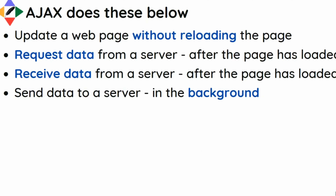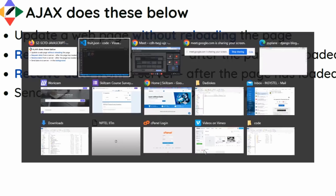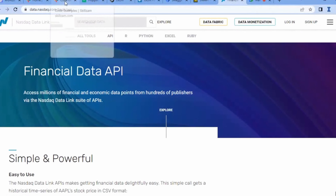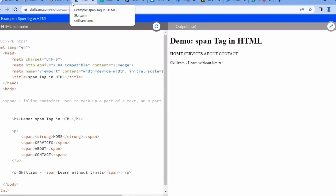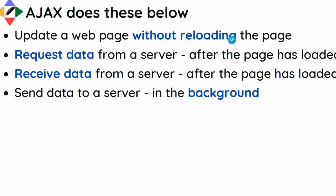Why do we need AJAX? Whenever you want to update a web page without reloading it — just by clicking a link, you can browse and operate within the page itself. You can update the web page without reloading, request data from the server after the page has loaded, receive data from the server, and also send data to the server in the background.